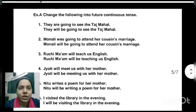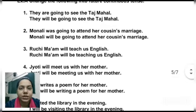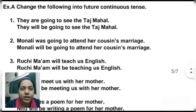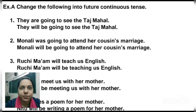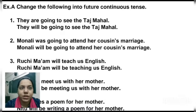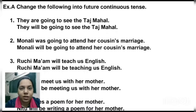Exercise A: Change the following into future continuous tense. First: 'They are going to see the Taj Mahal.' The verb is 'are going' and we change it to 'will be going.' With 'I' and 'we' we use 'shall'; with all other pronouns and subjects we use 'will.' So: 'They will be going to see the Taj Mahal.'